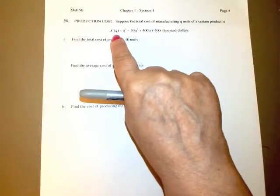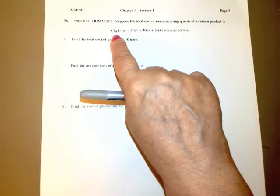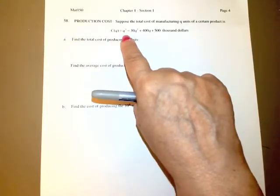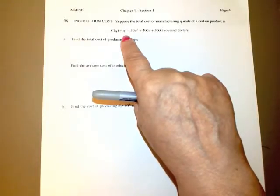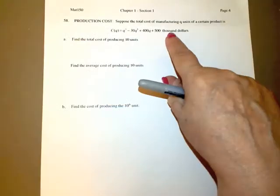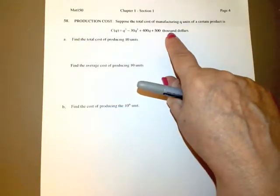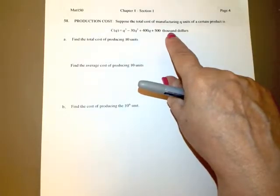That happens to be your dependent variable, essentially your Y value. And then Q is the number of units produced. They didn't tell us essentially what any of these things are except they say that cost is in thousands of dollars. And I would assume that Q is in numbers of units, whatever that is.